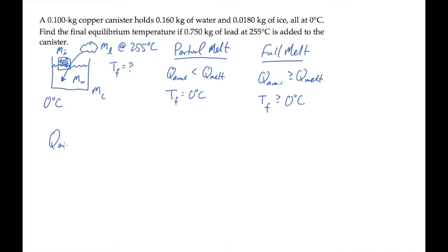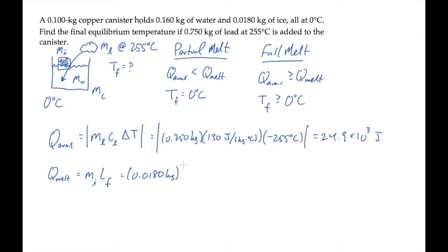The energy available to melt the ice comes from the lead, so that's MC delta T, where the temperature change is from the lead's initial temperature down to zero degrees Celsius. We can look up the specific heat for lead and calculate this to see it's 24.9 times 10 to the third joules. The energy required to melt all the ice is the ice's mass times water's latent heat of fusion. Those numbers are shown here, and it works out to 6.01 times 10 to the third joules.